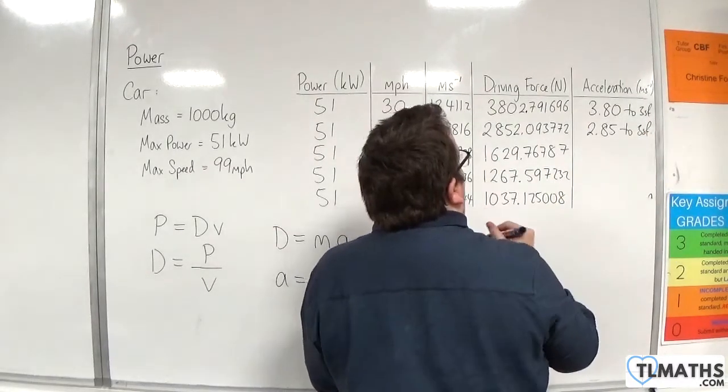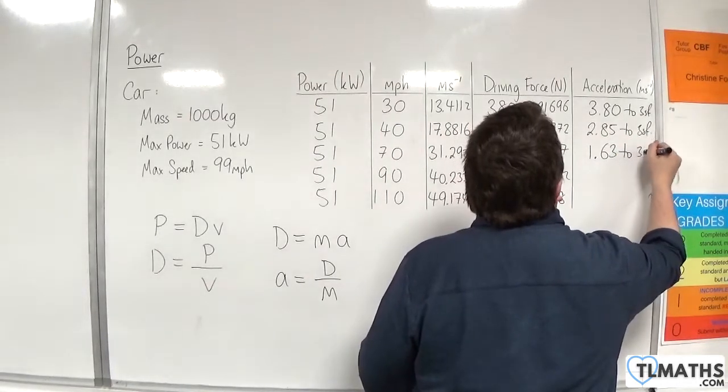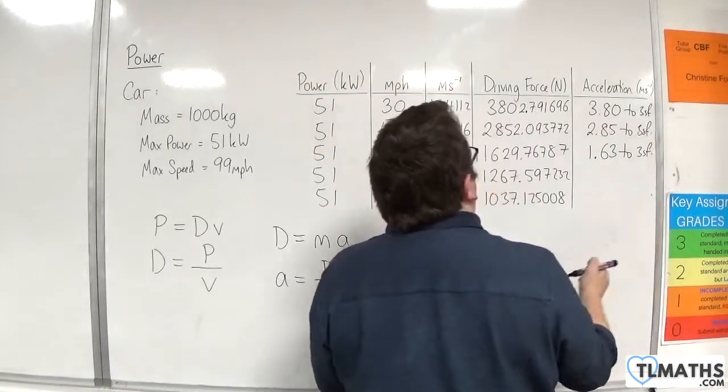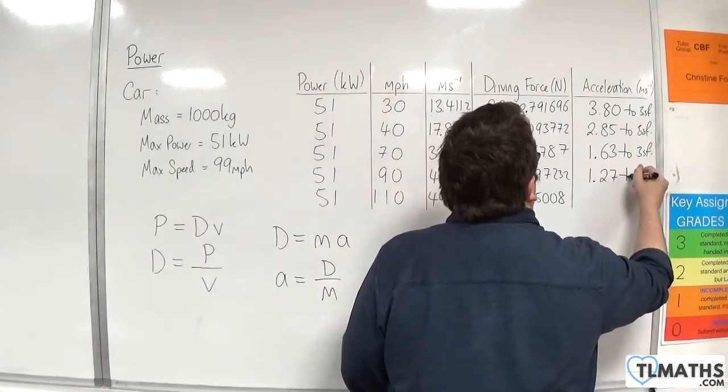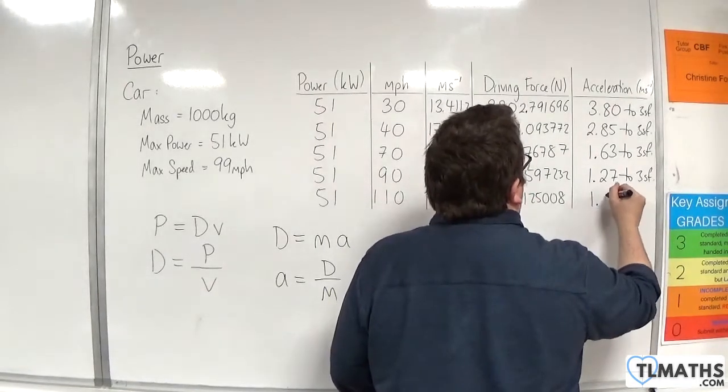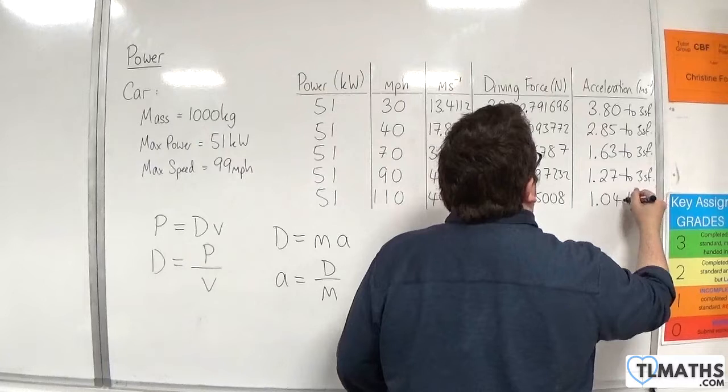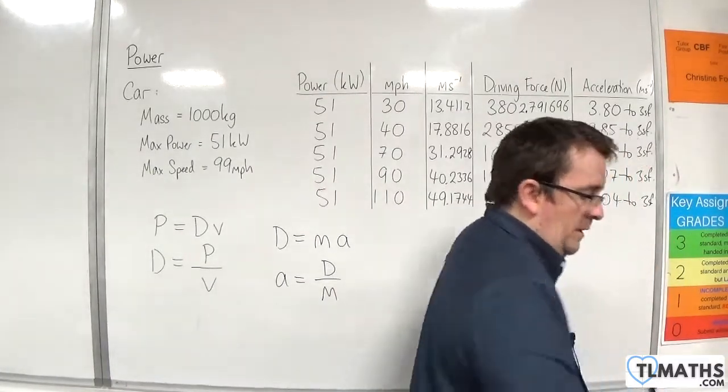Dividing that one by 1,000, 1.63 to 3 sig fig. Divide the next one by 1,000, 1.27 to 3 sig fig. And then the last one, 1.04 to 3 sig fig.